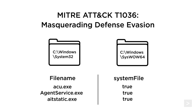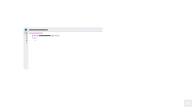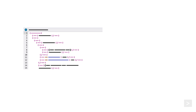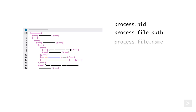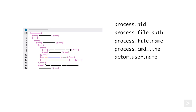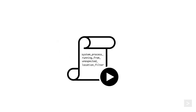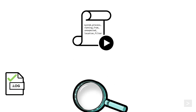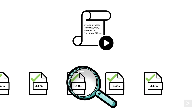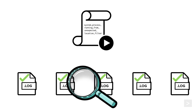This list of processes has been extracted from a GitHub repo — a link to the CSV is in the video description. This detection relies on Windows 4688 events with the following fields: processPid, processFilePath, processFileName, processCommandLine, actorUsername, actorProcessPid, actorProcessFilePath, actorProcessFileName, and deviceHouseName. Behavior Analytics also takes advantage of the system process running from Unexpected Location filter macro, allowing administrators to filter out any false positives identified during testing without changing the default SPL.